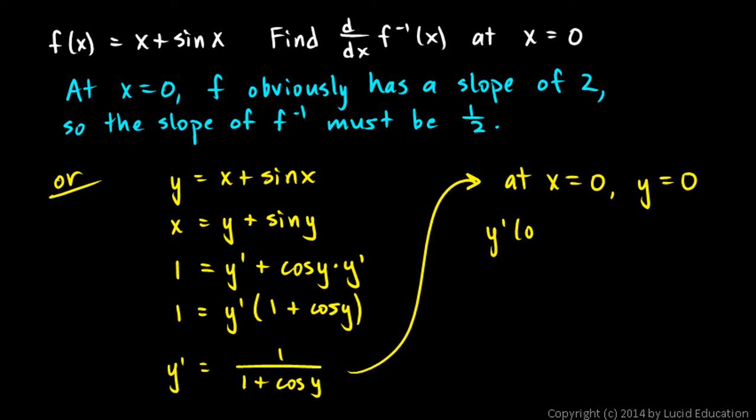So y prime at 0 is just 1 over 1 plus the cosine of 0. In other words, I took my original function, I took this known x value, evaluated y right there, and I have my value to plug in for y right down there. It just came up to 0. And cosine of 0 is 1. So this is 1 over 1 plus 1, which is a half, which is what we found by that method also.